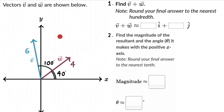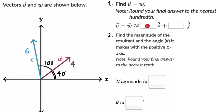Let's solve a question on adding vectors using the component method. We can see that vector v has a magnitude of 6 and vector w has a magnitude of 4. Vector v makes an angle of 100 degrees from the positive x-axis and vector w makes an angle of 40 degrees from the positive x-axis. The first part is to find v plus w in i and j cap components, and the second part is to find the magnitude of the resultant and its angle with the positive x-axis.